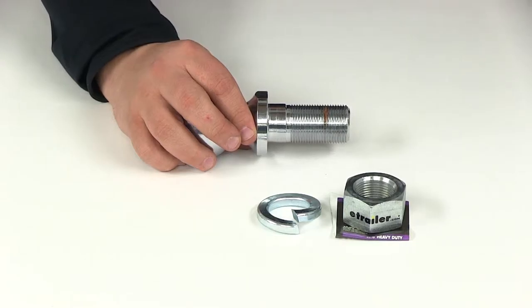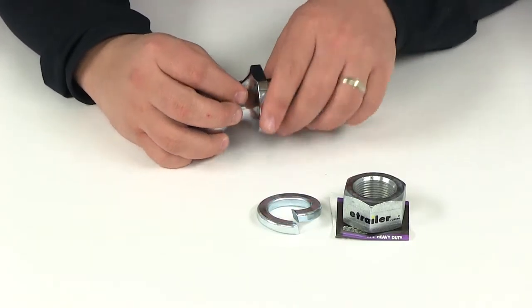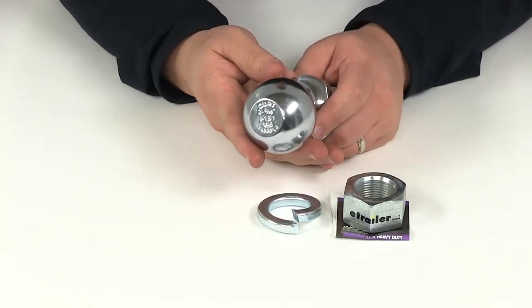This is designed to fit draw bar thicknesses of a half inch to one inch thick. The hitch ball is going to offer a capacity of 10,000 pounds.